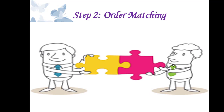In Step 2, Order Matching: the IC exchange order book connects the buyer and the seller. The best buy order — auto-weight's highest bid price — is matched with the best sell order — auto-weight's lowest offer price.